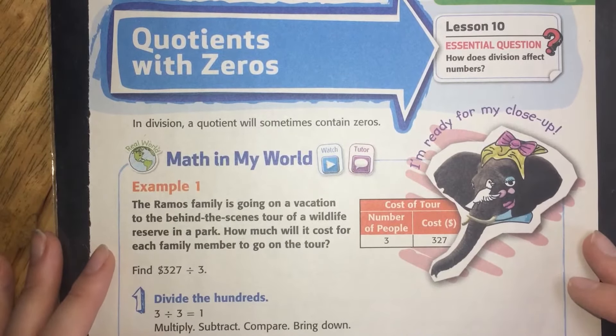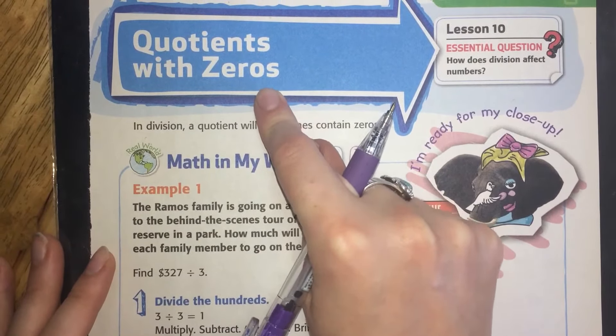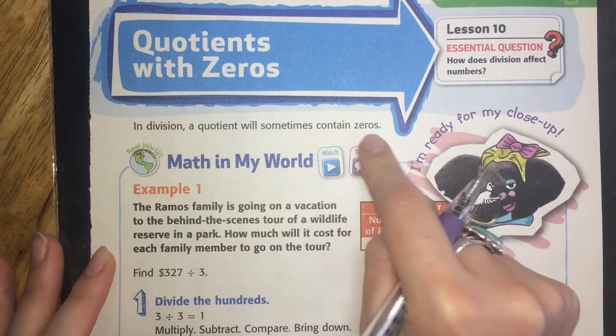Welcome to Chapter 6, Lesson 10, Quotients with Zeros. In division, a quotient will sometimes contain zeros.